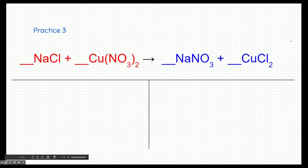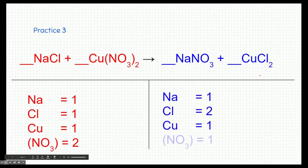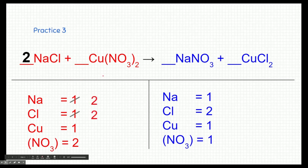Let's see if we can do it together. On the reactant side we have sodium, chlorine, copper, and we're going to keep nitrate together. There's one sodium, one chlorine, one copper, and this little subscript two on the outside of nitrate means there are two nitrates. On the product side, we have one sodium, two chlorines, one copper, and only one nitrate. So our chlorines now become two on the reactants and two on the product — balanced there.